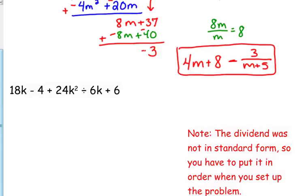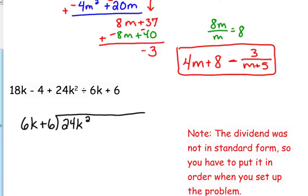Last one. Notice this one looks a little weird: 18k minus 4 plus 24k squared — it's not in standard form. So we have to make sure we put it in standard form when it goes under the division symbol. The k squared term goes first: 24k squared comes first, then plus 18k, then minus 4. Then we can proceed as normal. 24k squared divided...